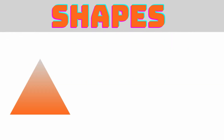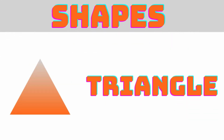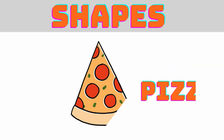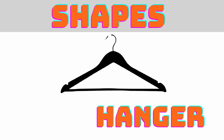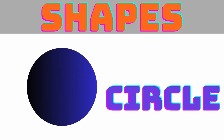First one is triangle. Let's see some examples: slice of pizza. Next one is rhombus.